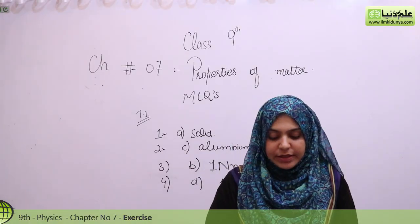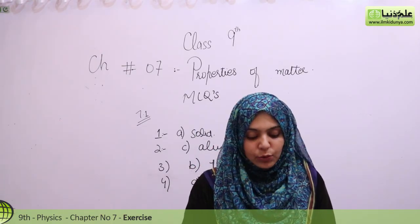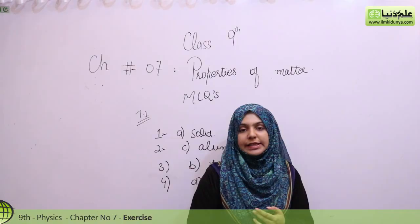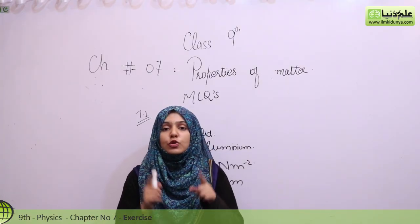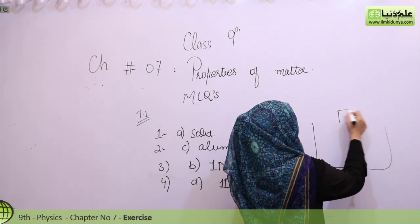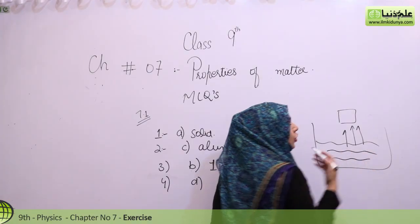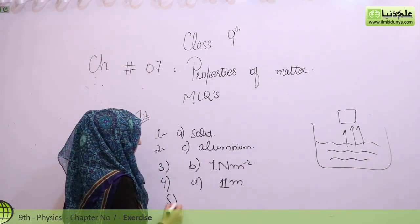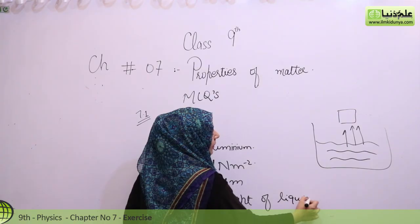Number 5: According to Archimedes' principle, the upward force (thrust) is equal to which of the following? Option A is the weight of displaced liquid, Option C is the mass of displaced liquid, and Option D is none of these. According to Archimedes' principle, the upward thrust force is equal to the weight of the displaced liquid. So Option A is the right answer.